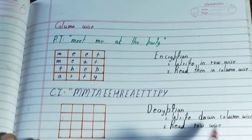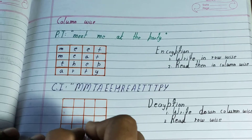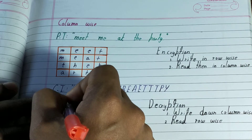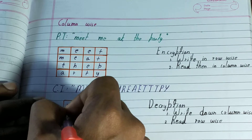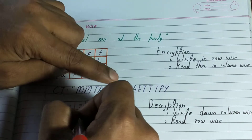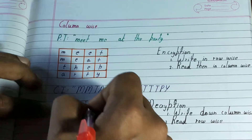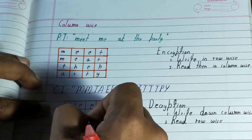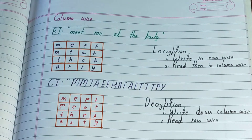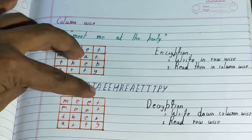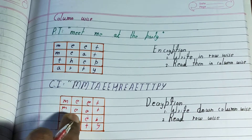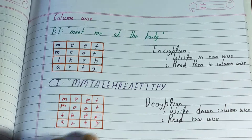To decrypt, we write the cipher text column-wise and read it row-wise. Writing column-wise: M M T A, then E E H R, then E A E T, then T T P Y. Reading row-wise gives: M E E T, M E, A T, T H E, P A R T Y.